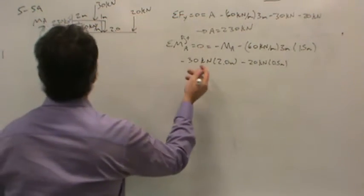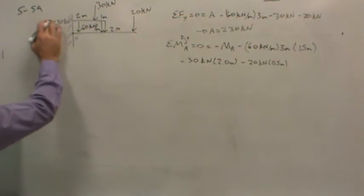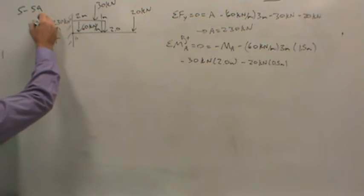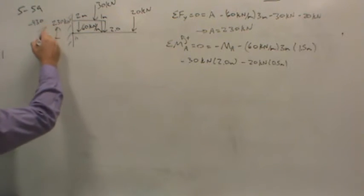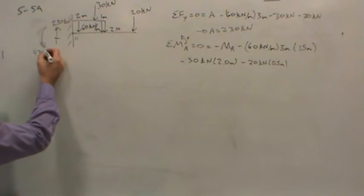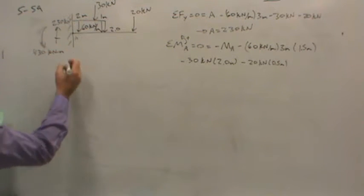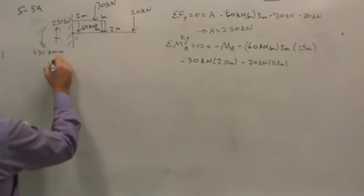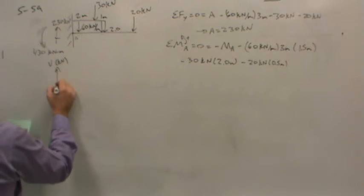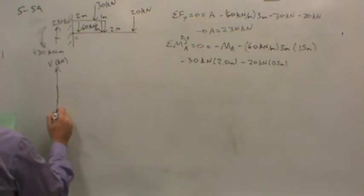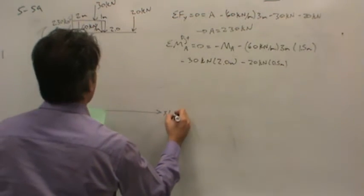So solving for the moment at A, I'll just write it over here. The moment at A is a negative 430 kilonewton meters. So there's the moment reaction of the wall as well as the force reaction. So now, let's try to create the shear in kilonewtons and moment diagrams. Let me get a little more space for the shear.